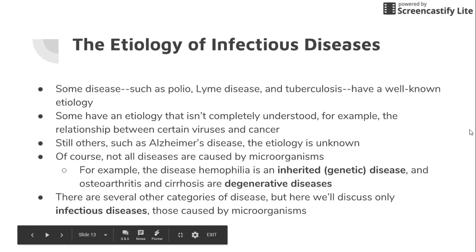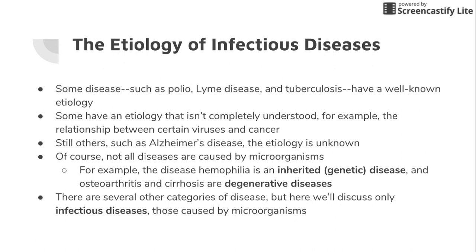Genetic disorders like hemophilia involve two parents coming together to create a child with the disease — no microorganisms involved. Degenerative diseases involve the breakdown of the body over time, such as osteoarthritis, which is the breakdown of bone and joint, and cirrhosis, which is the breakdown of the liver. We're only going to discuss infectious diseases here because those are caused by microorganisms, and this is microbiology. For genetic and degenerative diseases, you can take pathophysiology.